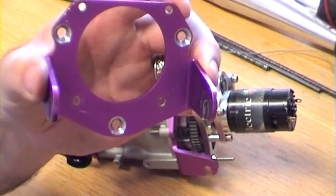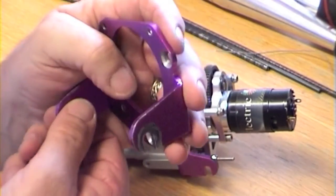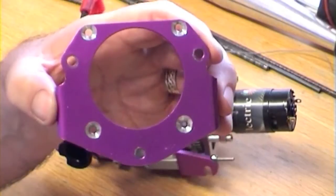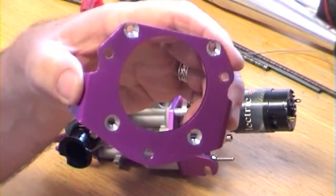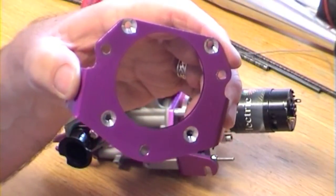And I thought well they're countersunk, so why not countersink the other ones on the inside. So there you go. And I bought some screws and put nuts on the end.